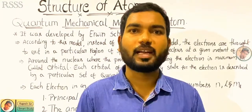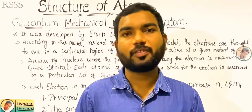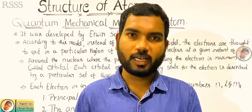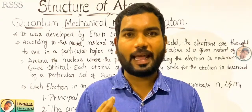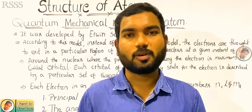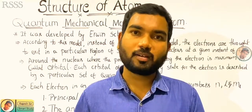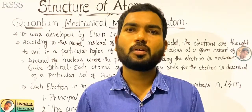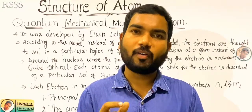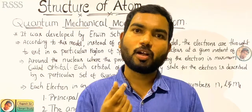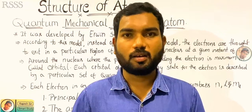Bohr and Bohr-Sommerfeld calculated the atom and orbitals. Here, we will find an electron, which is very small. Is it possible to find the velocity of an electron and also the position of an electron? We can take all the positions and calculate them.